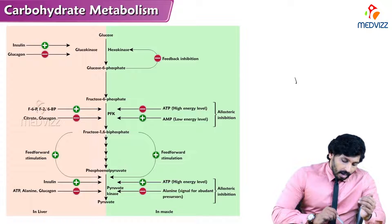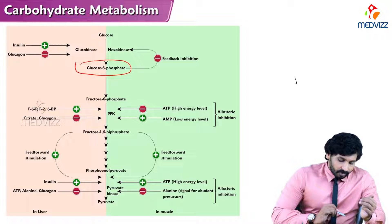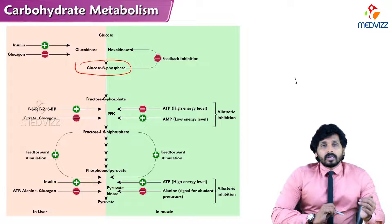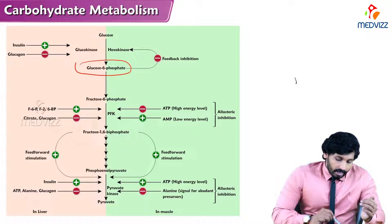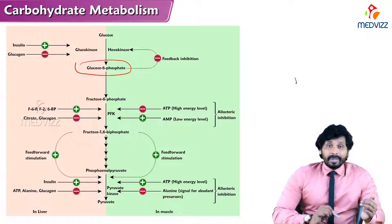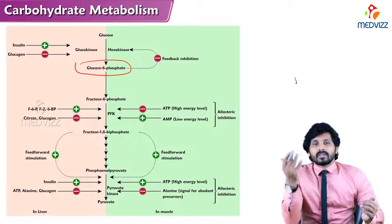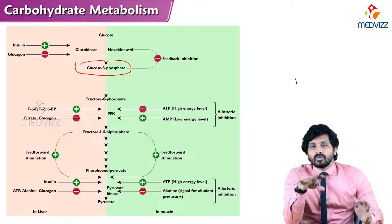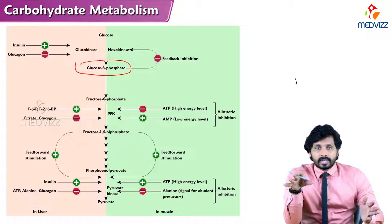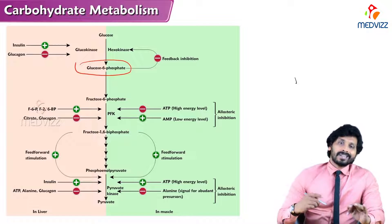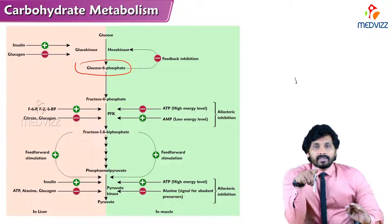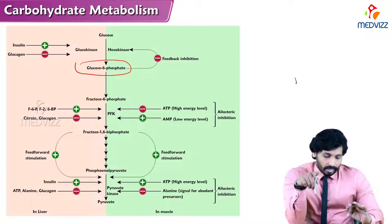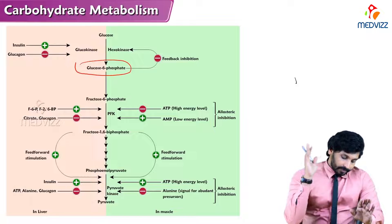The product of the first step, glucose-6-phosphate, acts as an inhibitor via a feedback mechanism. If there is excess ATP, there is no need for further glycolysis, so glucose-6-phosphate inhibits hexokinase and stops glycolysis.